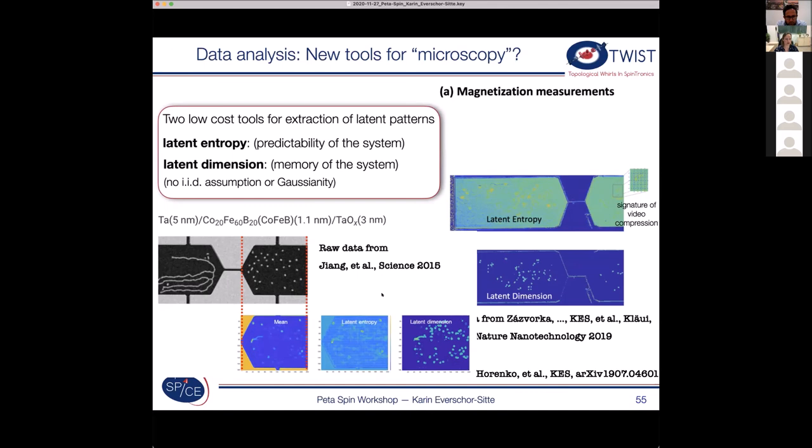So with that, let me summarize. So what we have developed are two low-cost tools to extract latent patterns. You can apply this on any type of MOKE data. And yeah, they don't have any assumptions. So they don't have these IID assumptions or Gaussianity. And with that, I'm at the end of my talk, and I would like to thank you for your attention.